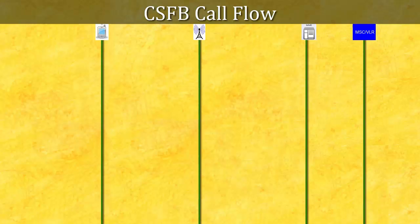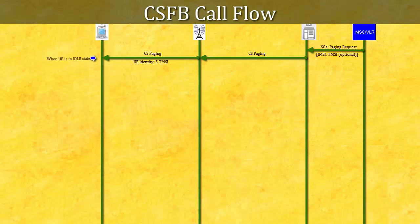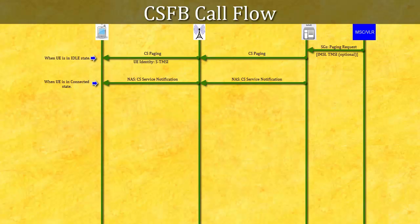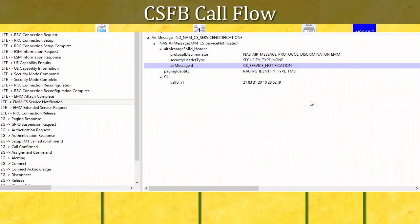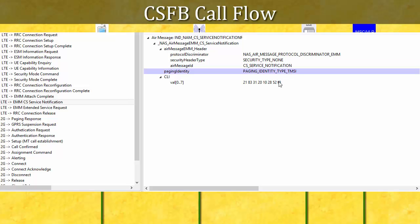Let's now see the actual CSFB call flow. For paging: VLR sends a paging request to MME over the SGS interface for an MT voice call. UE is identified by either TMSI or IMSI on these paging messages. If UE is in idle mode, MME sends paging messages to the UE. If UE is in connected mode, MME reuses the existing connection to send NAS message CS Service Notification to the UE. In this UE log, UE is in connected mode, so you can see the NAS message CS Service Notification sent by MME, with STMSI being used as paging identity.